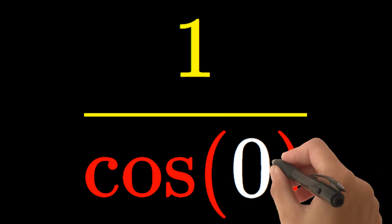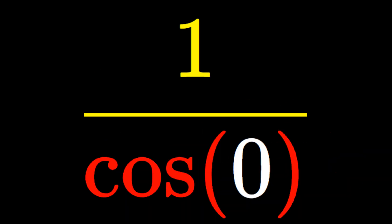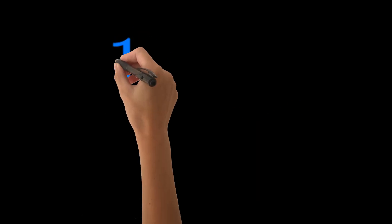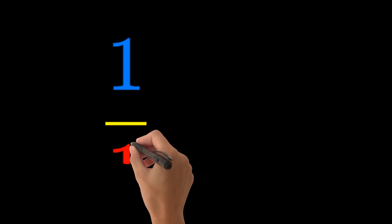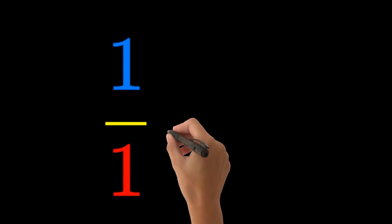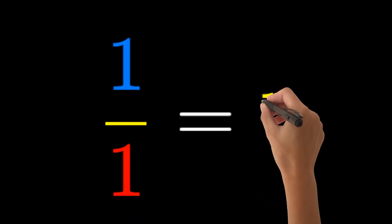So we get 1 over cosine of 0. We can evaluate the cosine function directly at 0, so we get 1 over cosine of 0 which is also 1, and so we get just 1 as the value of the limit.